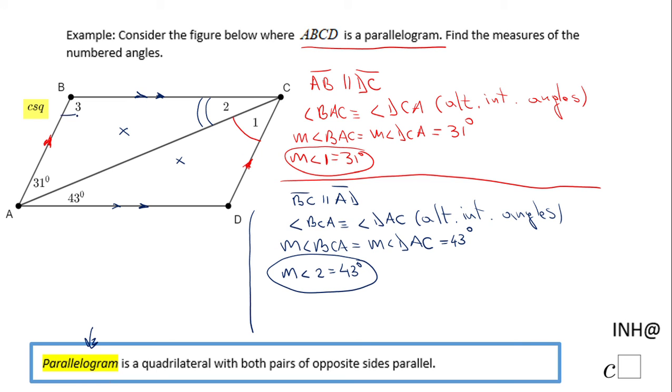This angle here, 3, and this angle here are supplementary angles. They are consecutive angles in a parallelogram. So I'm going to write this property.